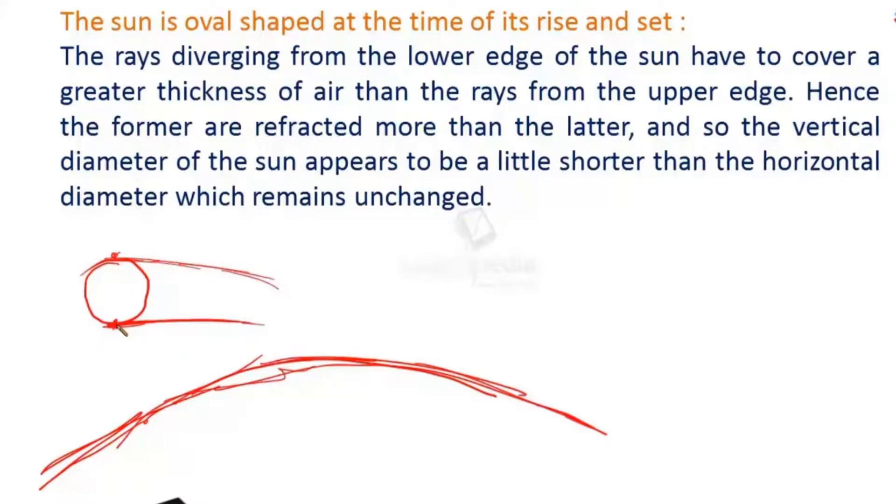So light rays from the bottom has to suffer more refraction than the light ray from the top. And because of this, distortion takes place. And the diameter of the sun appears shorter in the vertical direction. Vertical diameter appears shorter and horizontal diameter remains unchanged.